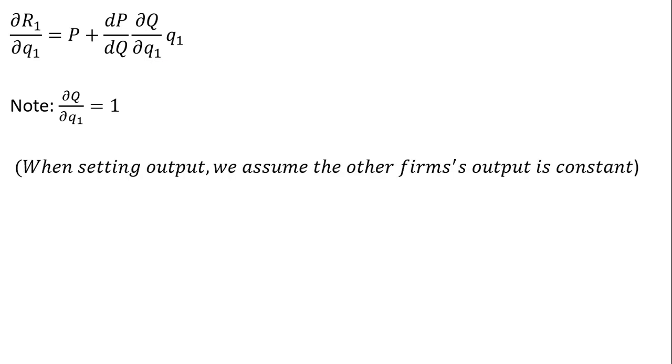We note that ∂Q/∂q₁ = 1 because when setting output, we assume the other firms' output is constant. When firm 1 sets its output, it assumes other firms won't increase or decrease their output in response. Making that substitution, we have ∂R₁/∂q₁ = P + (dP/dQ)q₁.